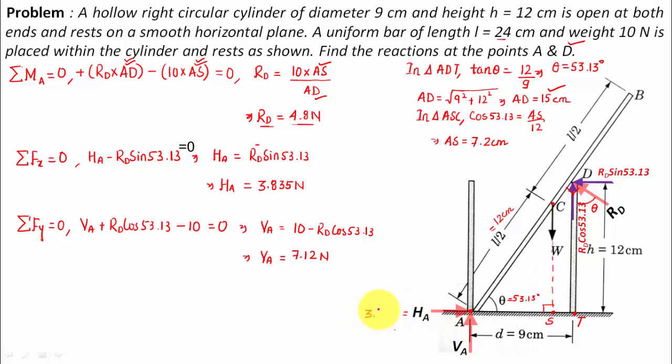Okay, so the value of HA is equal to 3.835 Newtons and the value of VA computed is 7.12 Newtons. Now the resultant of these two forces, that is horizontal and vertical forces, will be something of this sort, and let's say that the name of resultant is RA. So RA essentially can be calculated as the square root of HA squared plus VA squared.